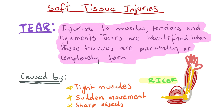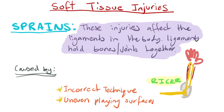The first soft tissue injury we'll have a look at is a tear. These are injuries to the muscles, tendons and ligaments. Tears occur when these tissues are partially or completely torn. They're caused by tight muscles — if an athlete hasn't exercised for a while and their muscles are very tight — sudden movement such as changing direction, or a sharp object embedding within the skin and tearing the muscle. The treatment for a tear is RISA.